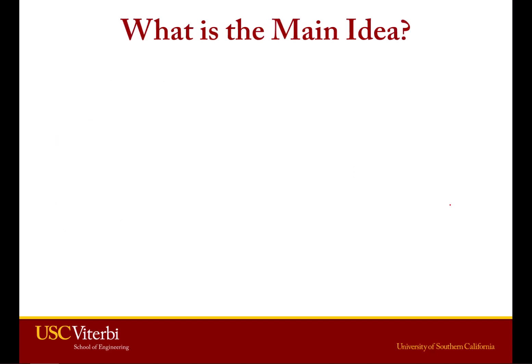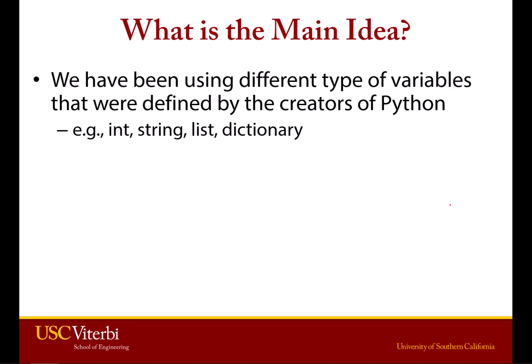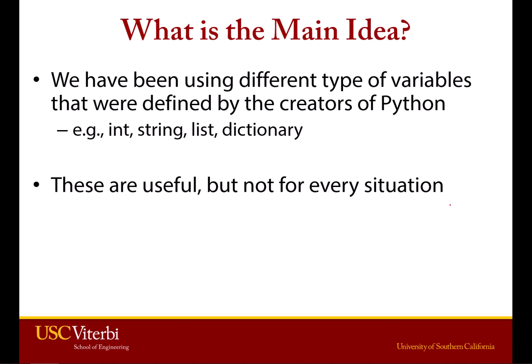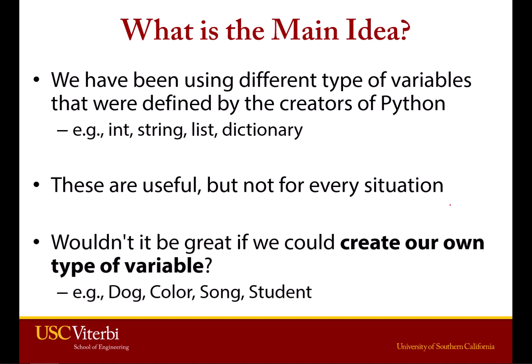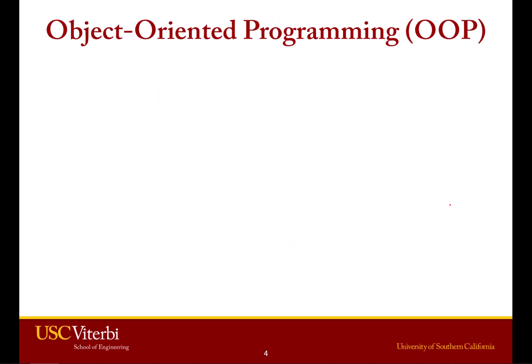What is the main thing we want to accomplish by talking about objects? We've been talking about variables all semester — things like lists, strings, ints, and dictionaries. These were created by the people that wrote Python and are containers for storing different pieces of data. They're really useful, but they don't work in every situation. Sometimes we want more custom things, like a variable that represents a dog, a color, or a song. This is where we get into object-oriented programming.